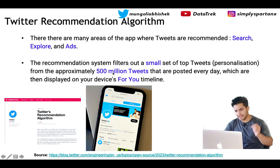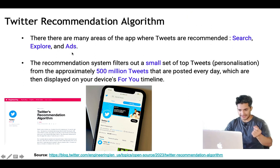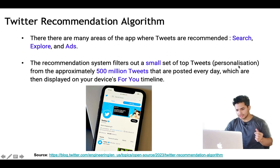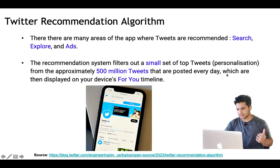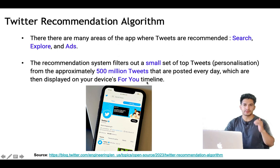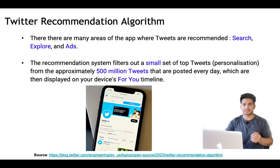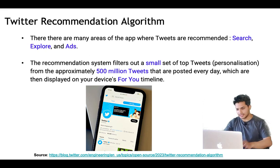There are many areas of the app where tweets are recommended, like search, explore, and ads. The recommendation system filters out a small set of top tweets from approximately 500 million tweets that are posted every day, and these are displayed on the 'For You' timeline. So basically, out of 500 million tweets posted every day, a few tweets which are more relevant to the user are personalized and displayed in their For You timeline, which is the home page.